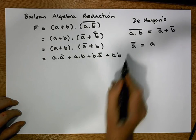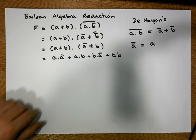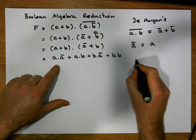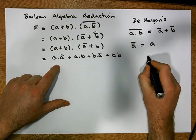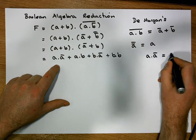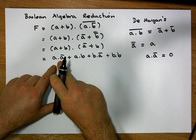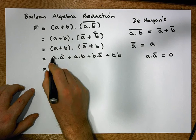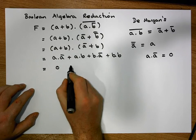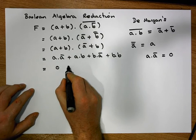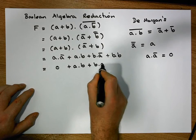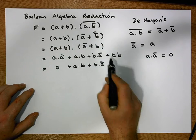We know from a previous video that A AND Ā is equivalent to zero. So the term A AND Ā reduces to zero. We can't simplify A AND B at this stage, so we leave it as (A AND B) OR (B AND Ā).